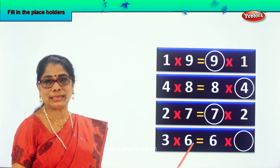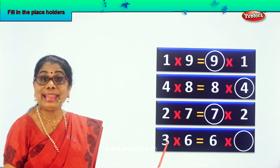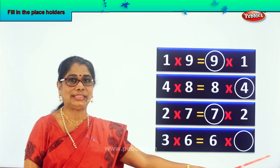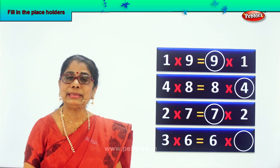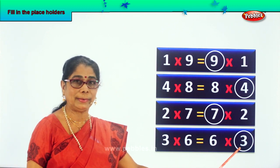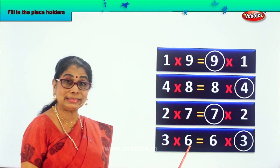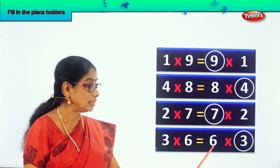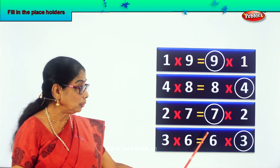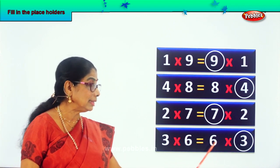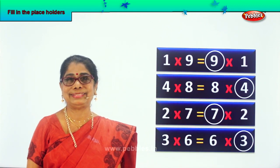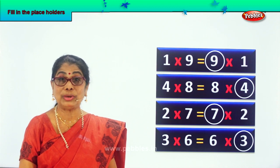So the last one. 3 into 6. 6 threes are 18. 18 is also equal to 6 into dash. How to get 18? 6 into what will give you 18? Definitely it has to be 3 only. Look carefully. 3 into 6 is equal to 6 into 3. This answer is equal to the answer on the other side. Fitting in placeholders carefully.